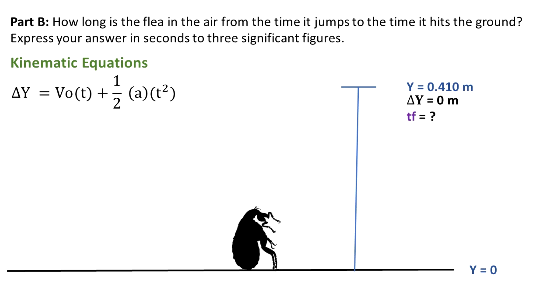We know that displacement is x final minus x initial. As the flea goes up, but it comes back to the ground where it started, that's why displacement is equal to zero. We can see that we got a second degree equation.